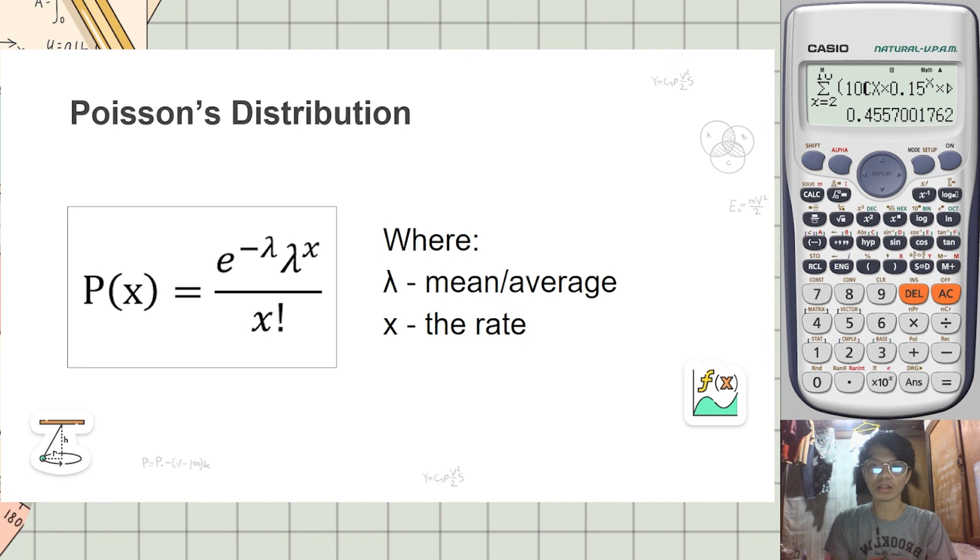For the formula, the probability of x is equal to e raised to negative lambda times lambda raised to x, all over x factorial, where lambda is the mean or average and x is the rate of the distribution.